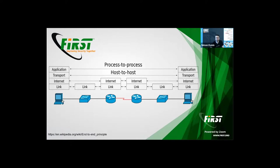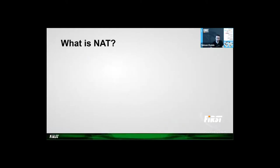Back in the 80s, computers were big and expensive and not a common commodity like today. At a later point, each house didn't have more than one computer, and that computer wasn't necessarily connected to the internet, and if it was, it wasn't 24/7. At some point people had more than one computer at the house, but they had only one telephone or cable line. There was a need to connect multiple computers to the same external line. In order to do so, NAT was created. It maps multiple addresses to a single point by modifying the headers of the packets.